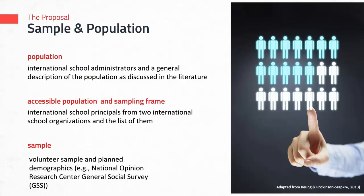Let's look at an example. Say there is a researcher who wants to study international school administrators — that's the population — and he has access to international school principals from two international school organizations. This is his accessible population. He's going to talk about what he knows from the literature about the international school administration population, and then what he knows about his accessible population — information he can gather from these two organizations. He may then state that he's going to take a volunteer sample of the international school leaders from the lists provided to him by these two organizations.